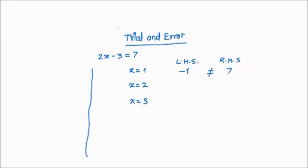Next, x equals 2: LHS is 2 into 2 minus 3 equals 4 minus 3 equals 1. That is also not equal to RHS of 7.